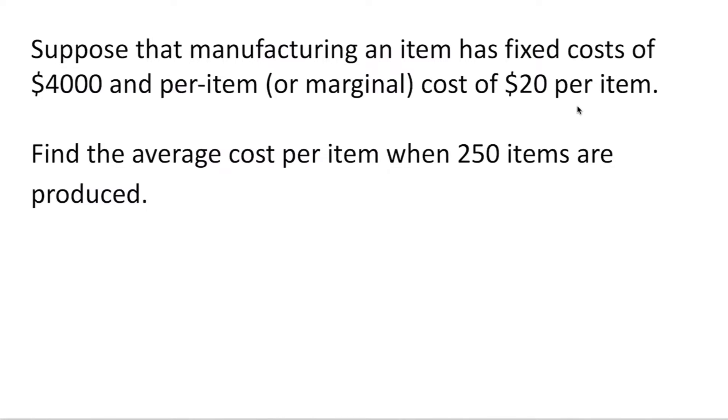Let's find the average cost per item when 250 items are produced. Before we can find the average cost, we first need to find our total cost. Our total costs are the sum of our fixed costs plus our variable cost.